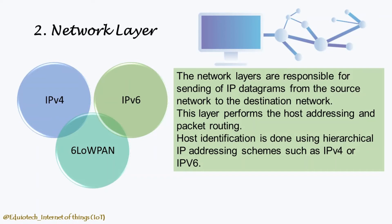The network layer is responsible for sending IP datagrams from the source network to the destination network. This layer performs host addressing and packet routing. The datagrams contain the source and destination addresses, which are used to route them from the source to destination across multiple networks. Host identification is done using hierarchical IP addressing schemes such as IPv4 or IPv6.